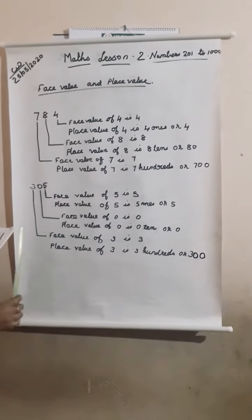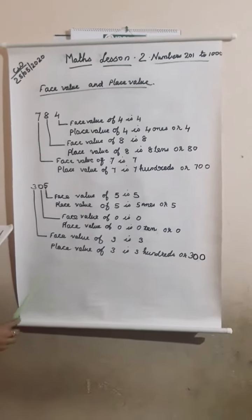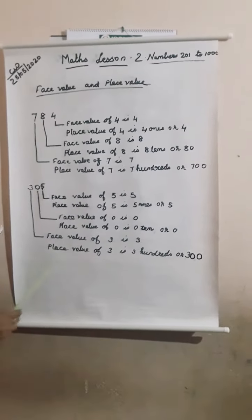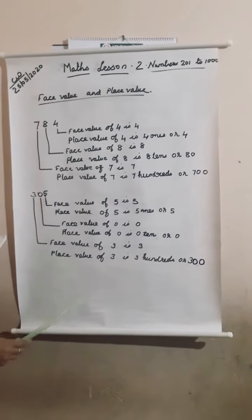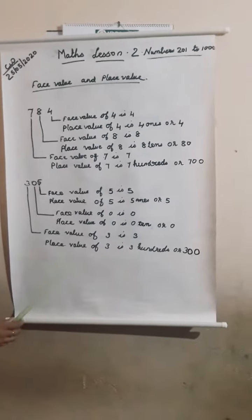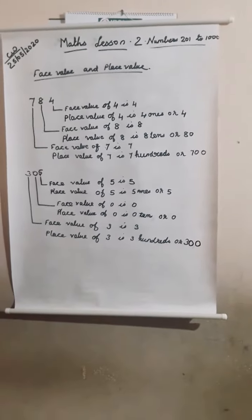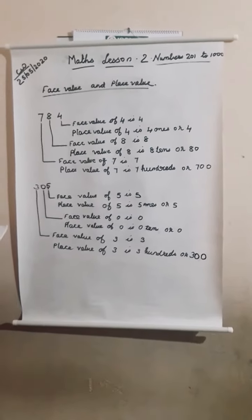Once again children, face value of a digit is the digit itself. Face value of a digit never changes. Place value of a digit depends on its face value and its place in a number. Place value of a digit changes with the change in place.